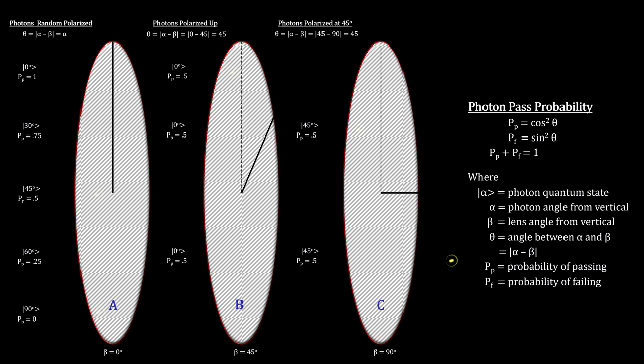The key takeaway here is that objects like lenses, crystals, electric fields, etc., can and do modify the quantum states of the particles that encounter them.